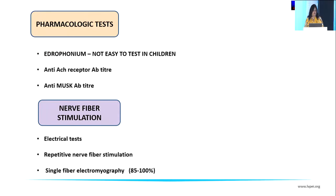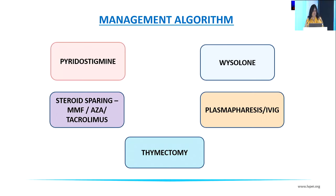Pharmacological tests include edrophonium, anti-ACh receptor antibody titer, and anti-MuSK antibody titer — usually ordered as a combination. Electrical tests include repetitive nerve stimulation (showing decremental response after 3–5 stimulations) or single fiber electromyography. The management algorithm includes pyridostigmine in combination with steroids; at some stage a steroid-sparing agent — mycophenolate, azathioprine, or tacrolimus — should be considered. Plasma exchange or IVIG is individual case-based. Thymectomy is most valuable in seropositive ACh receptor-positive myasthenia.